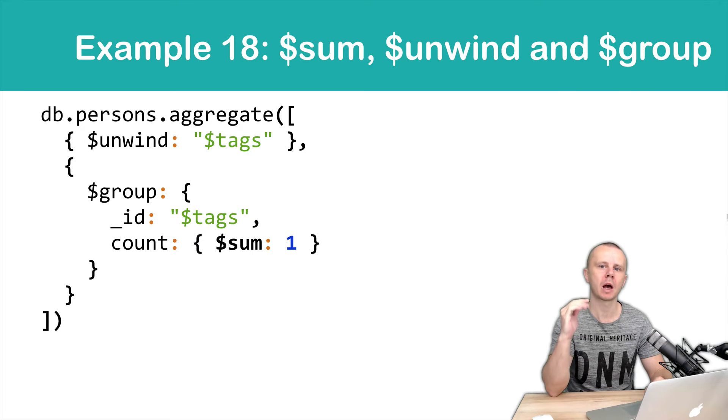In this example, we will add one more stage before the group stage and it will be the unwind stage. Remember that unwind works with arrays, so we take an array and each document that contains this array will be split into several documents.